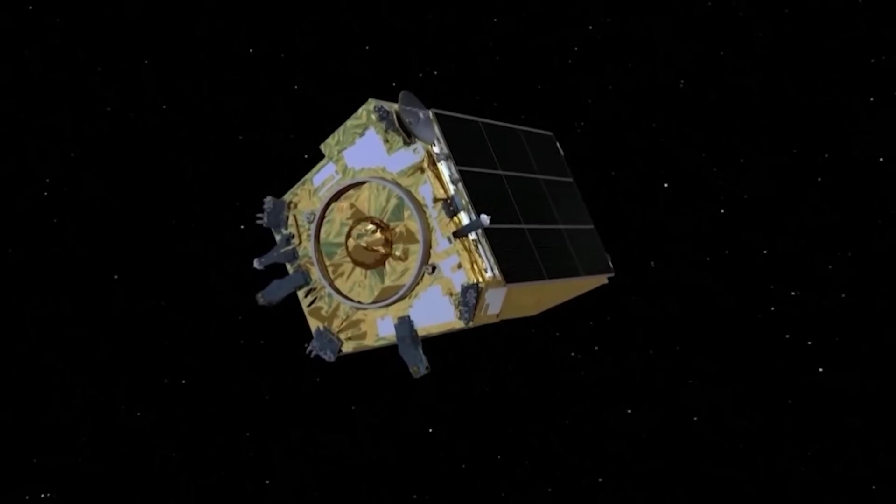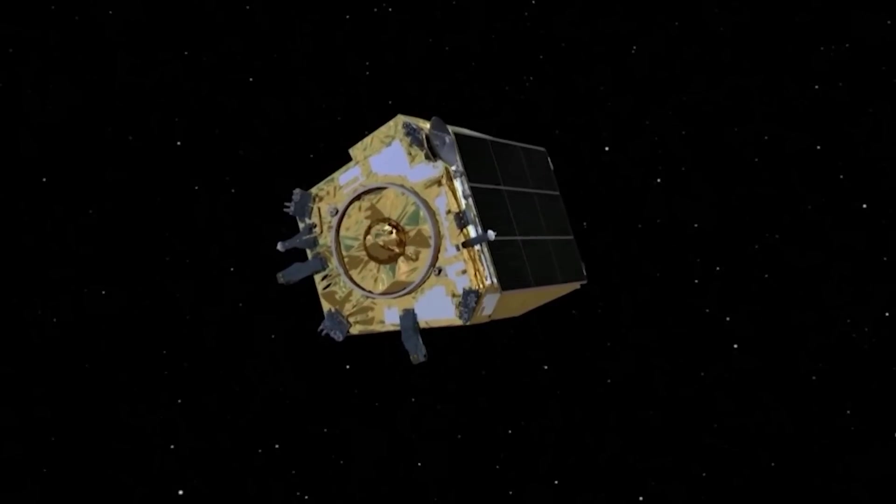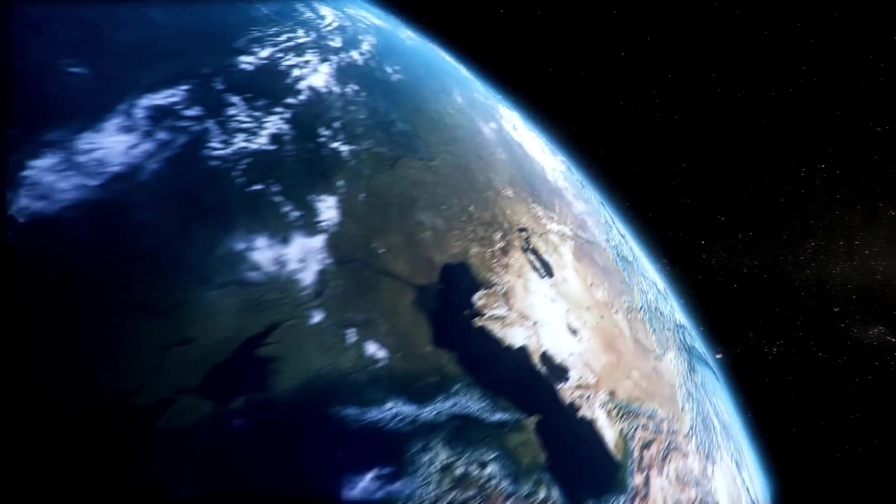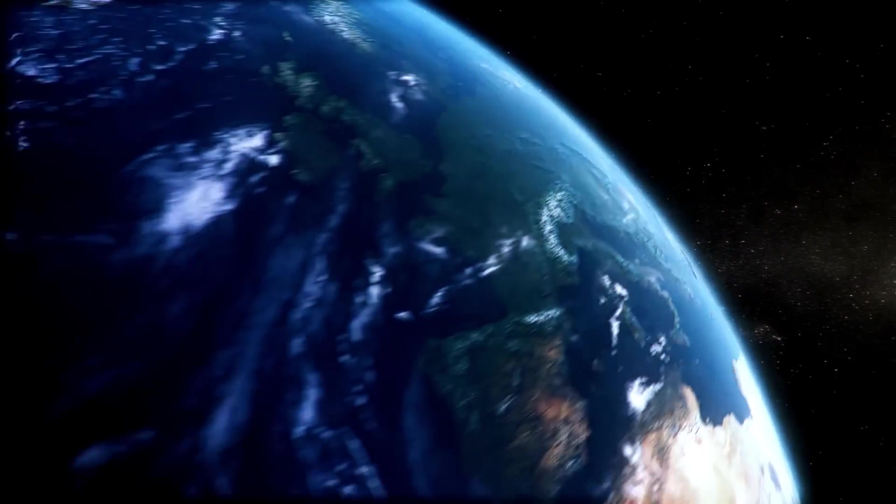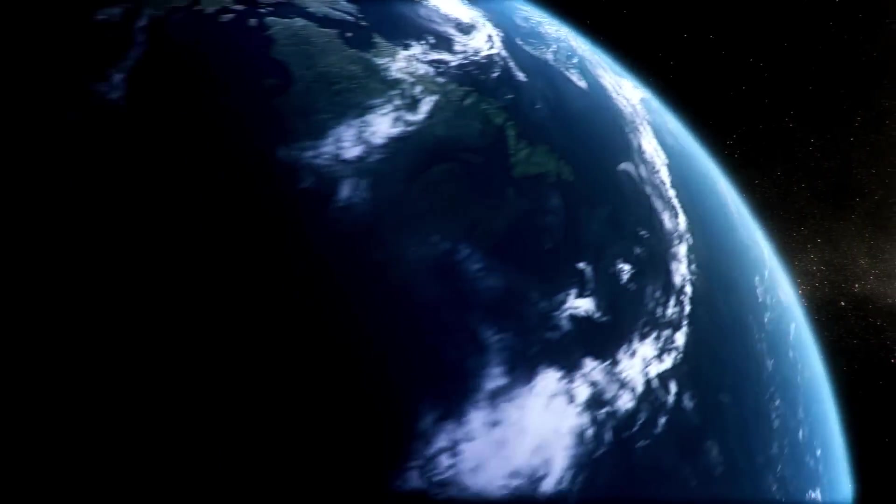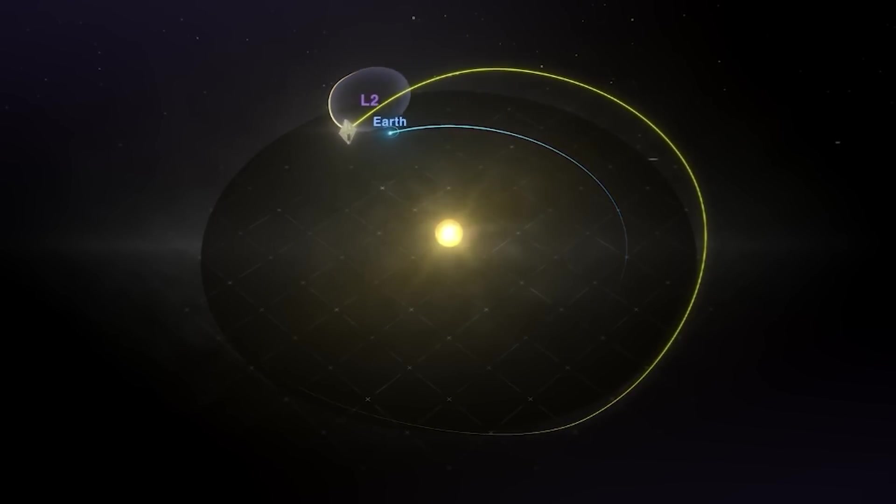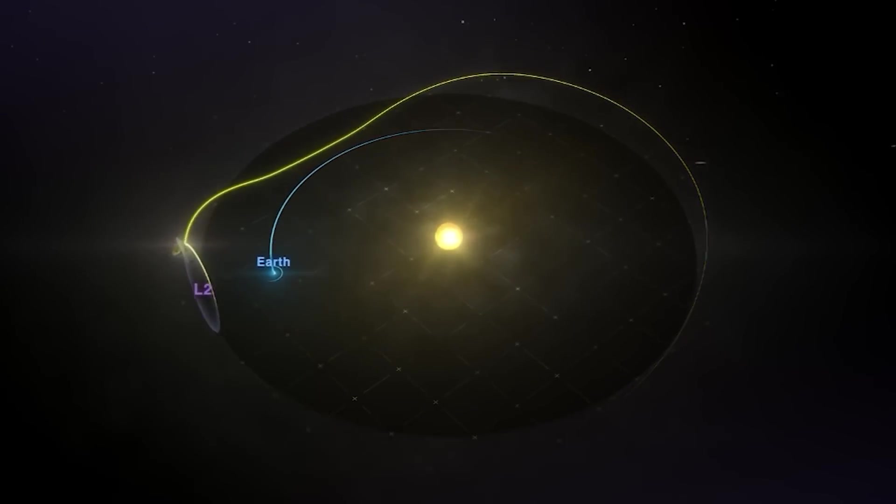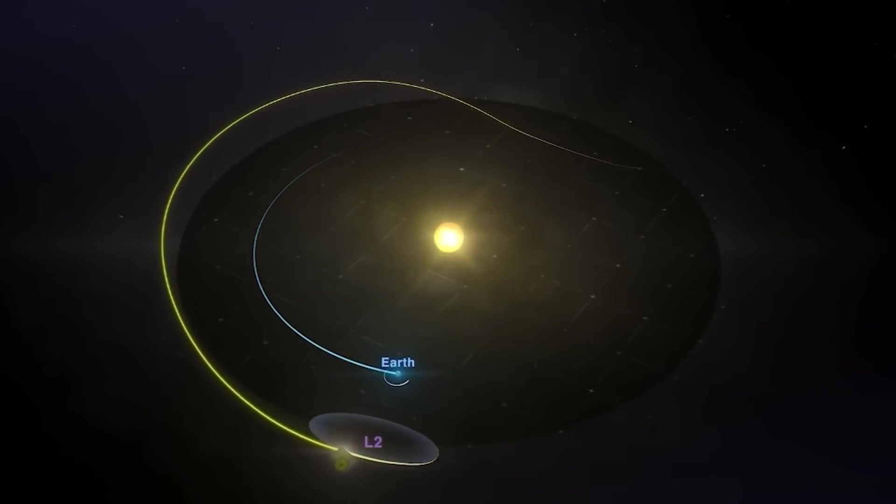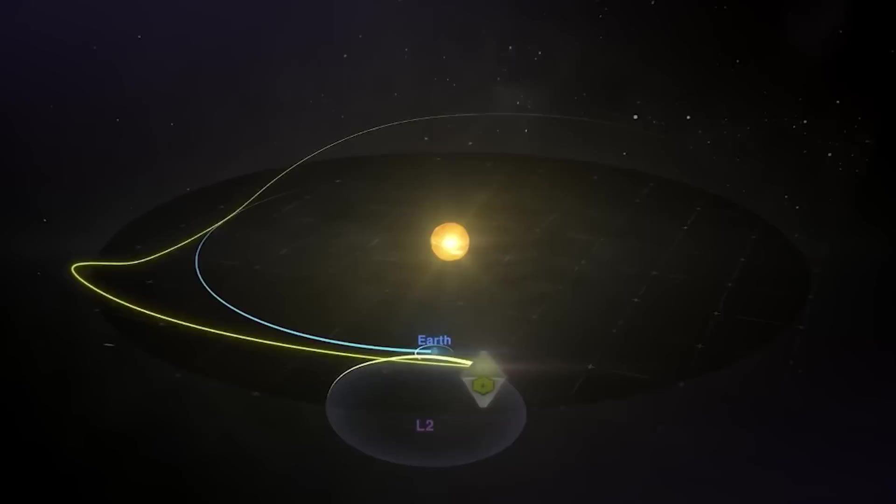The Euclid telescope will embark on an exciting journey to reach its destination, a point nearly one million miles away from Earth in the opposite direction of the Sun. Once it arrives, it will enter the second Lagrange point, L2, orbit, where it will join the Webb telescope in exploring the wonders of deep space.